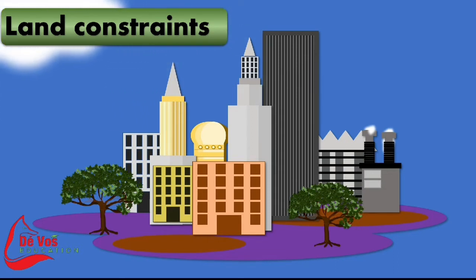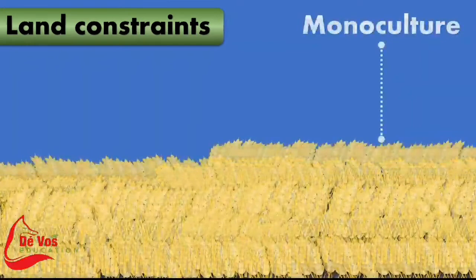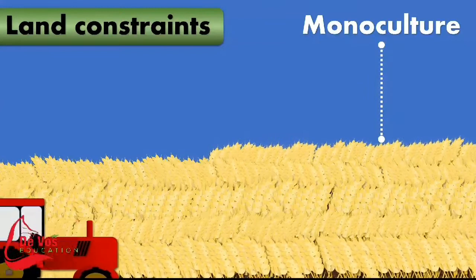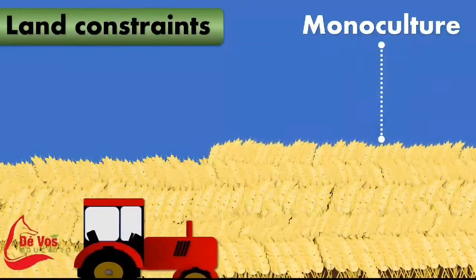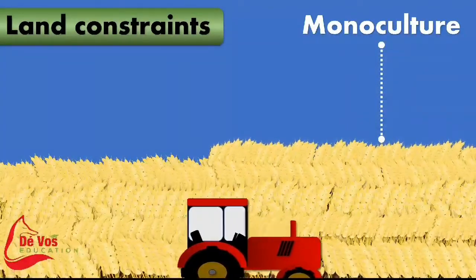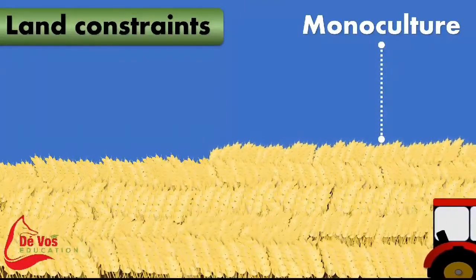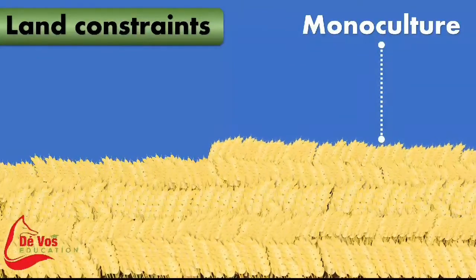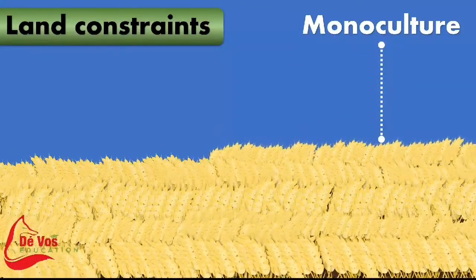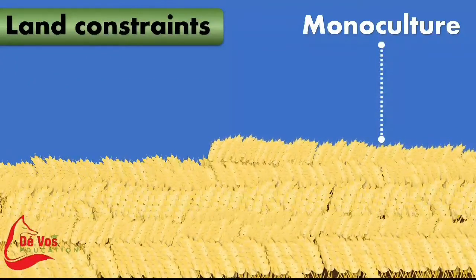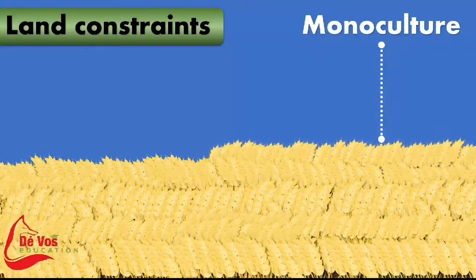Monoculture farming is the planting of the same crop in the same place each year. Unfortunately, this leaches nutrients from the earth and leaves the soil weakened and unable to support healthy plant growth. Because the structure and quality of the soil is so poor, farmers are often forced to use chemical fertilizers to enrich the soil and encourage plant production. Most of our world's staple foods are produced through monoculture.